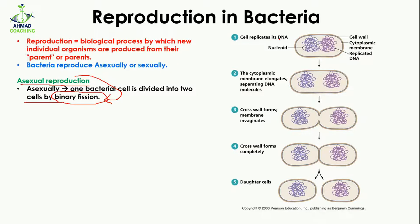In binary fission, the cell replicates its DNA. We have this bacterial cell and in it we have this nucleic acid or DNA. This DNA is going to be divided into two DNA. The cytoplasmic membrane is going to elongate, separating the DNA molecules. The size increases and these two DNA molecules are going to move towards opposite poles.